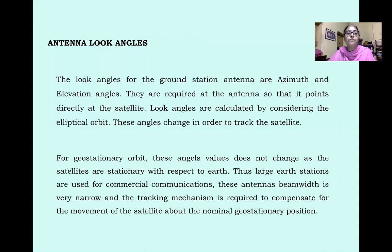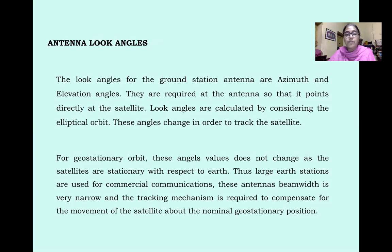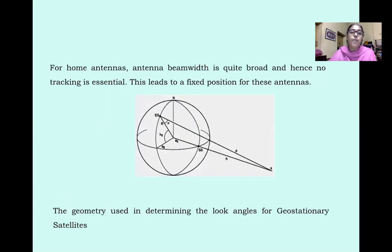Locating Satellite in Orbit — Antenna Look Angle: The look angles for a ground station antenna are azimuth and elevation angle, required so that the antenna points directly at the satellite. Look angles are calculated by considering the elliptical orbit and change in order to track the satellite. For geostationary orbit, these angle values do not change as the satellites are stationary with respect to the earth. Large earth stations are used for commercial applications, where the antenna beam width is very narrow and a tracking mechanism is required to compensate for the movement of the satellite about the nominal geostationary position.